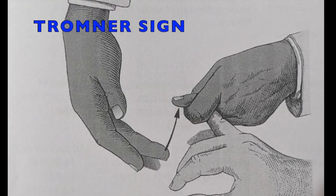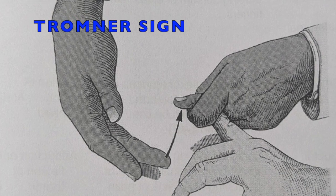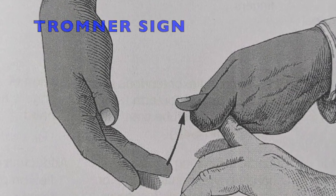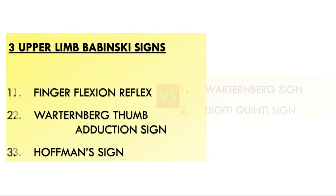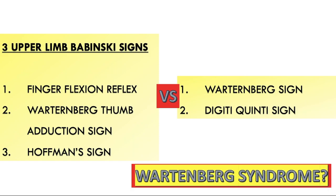Hoffmann sign and Tromner sign are both almost the same. This picture has been taken from De Jong's clinical methods. I also tried to give clarification between Wattenberg thumb adduction sign, Wattenberg sign, and digiti quinti sign. I end this video by giving you an assignment: try to find out what is Wattenberg syndrome. Thank you.